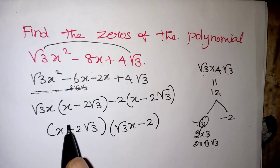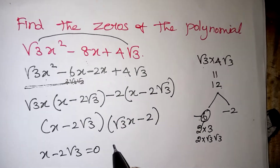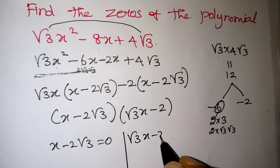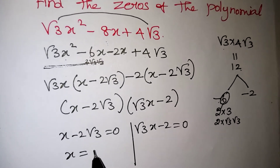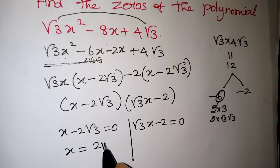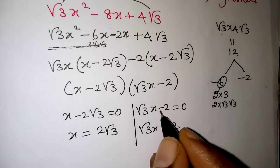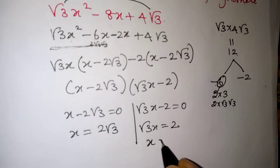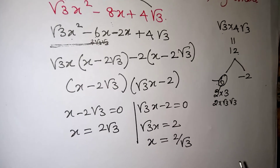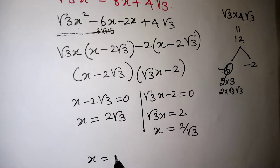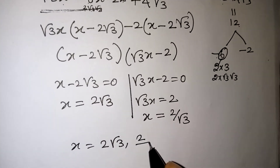Take (x - 2·root 3) as the common term. The remaining factor is (root 3·x - 2). Now set both factors equal to zero. From x - 2·root 3 = 0: x = 2·root 3. From root 3·x - 2 = 0: root 3·x = 2, so x = 2 / root 3.